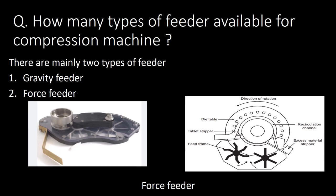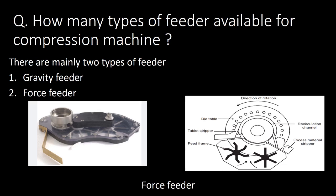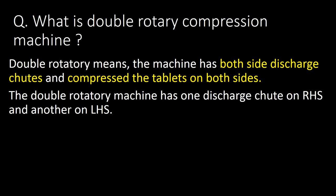How many types of feeders are available for a compression machine? There are mainly two types of feeders: gravity feeder and force feeder. Gravity feeders are no longer in use for advanced compression machines. You can refer to the photographs below of force feeders.